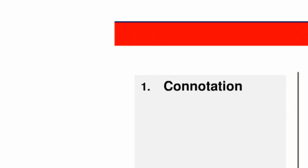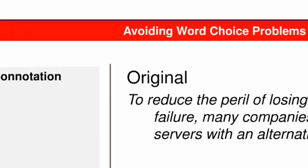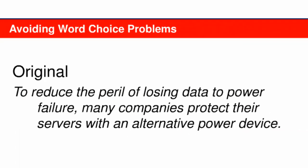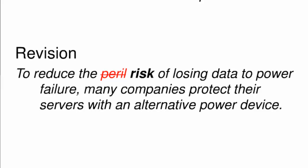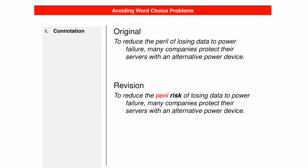There are six sources of word choice problems. Connotation is the first source. The word 'peril' denotes the same meaning as danger or risk, but also connotes the sense of life and death. Its use in this sentence from the recommendation report is therefore inappropriate because the loss of data is not equivalent to the loss of life. In the revised version, the use of 'risk' is more accurate and creates a more appropriate style for the writer's purpose and the audience's reaction. When professional writers choose words with inappropriate connotations, their readers may be distracted by the connotation rather than focused on the writer's intended meaning.